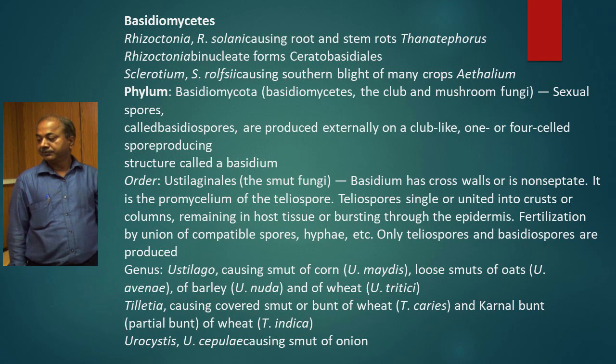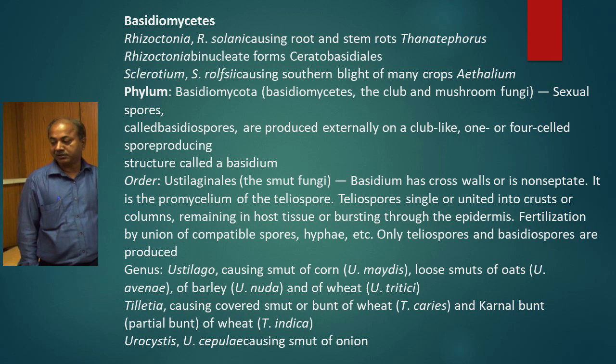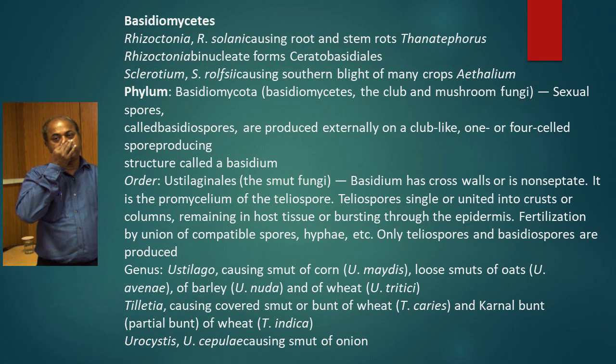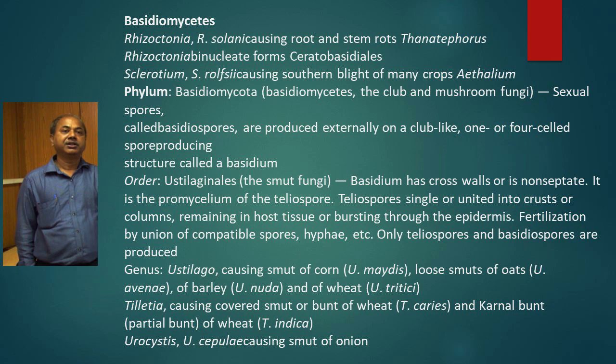Phylum Basidiomycetes includes club fungi, mushroom fungi. The basidiospores are produced externally on a club-like structure — a one or four-celled spore-producing structure called a basidium. Under Basidiomycetes, there are two orders: Ustilaginales and Uredinales.